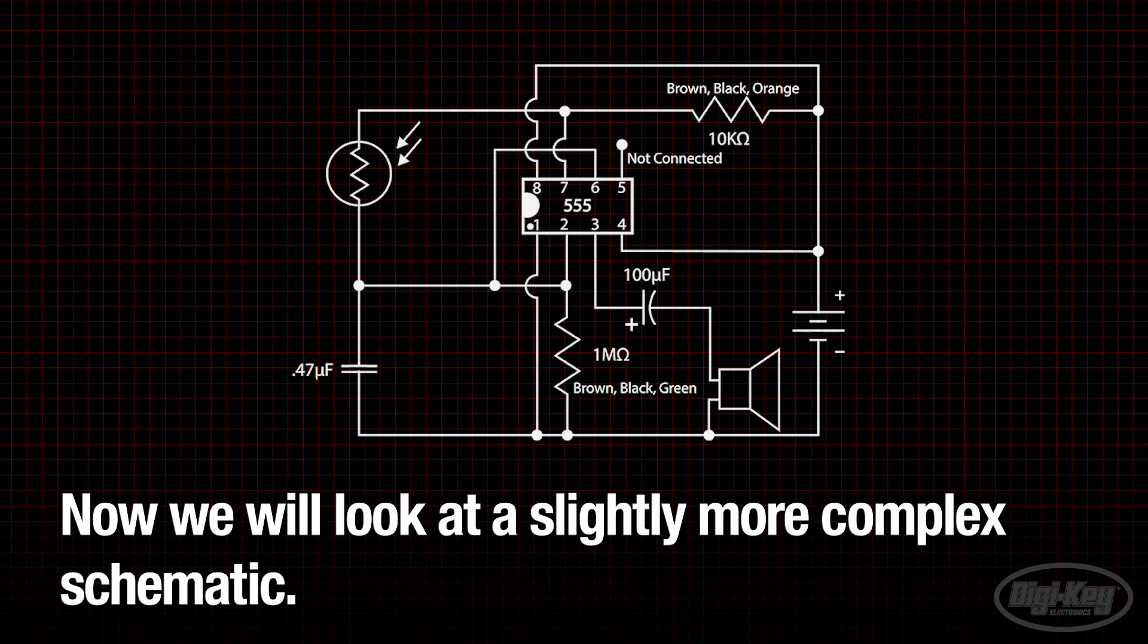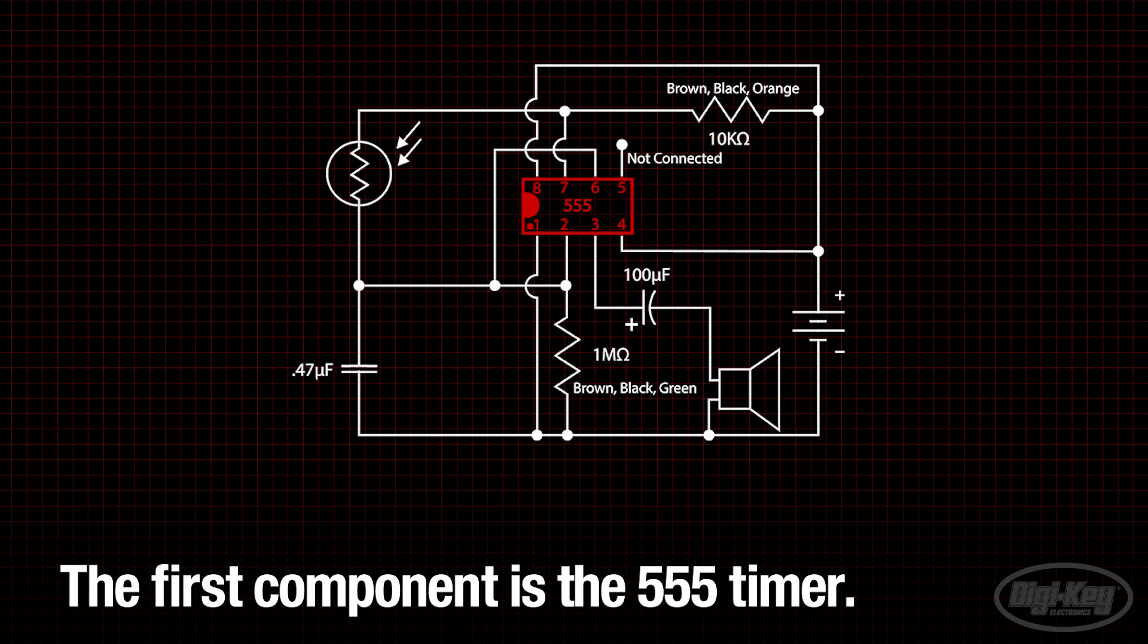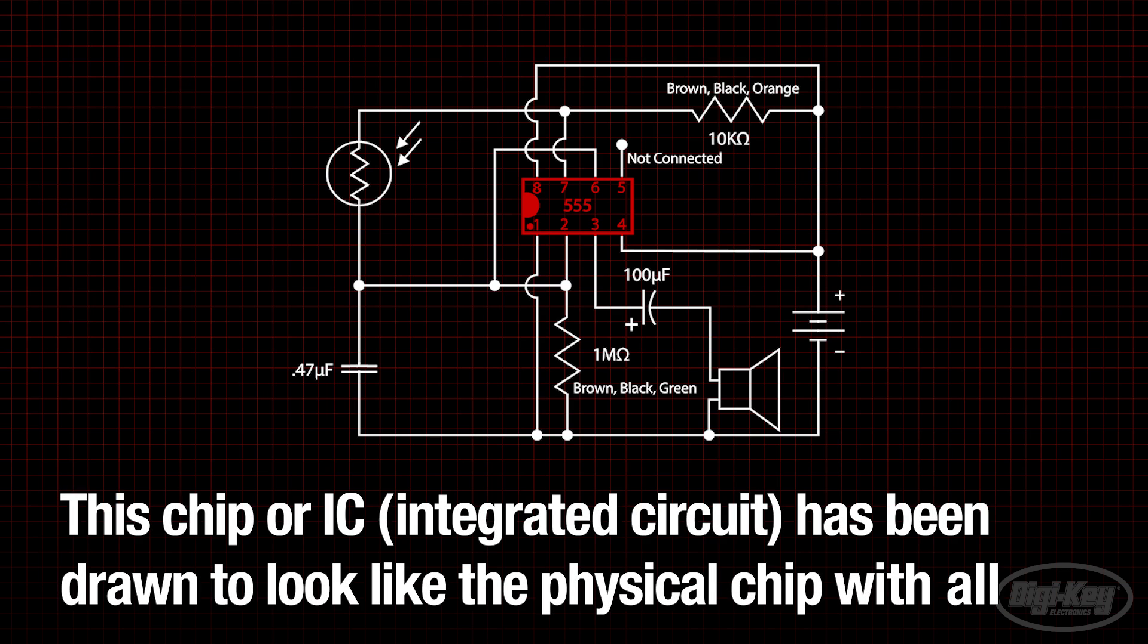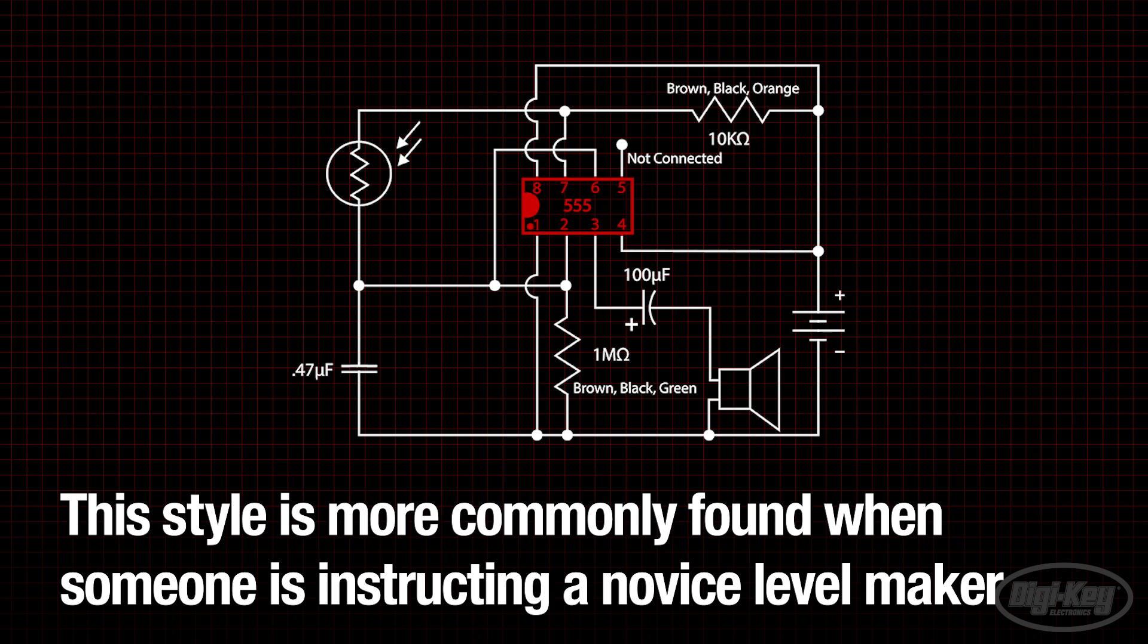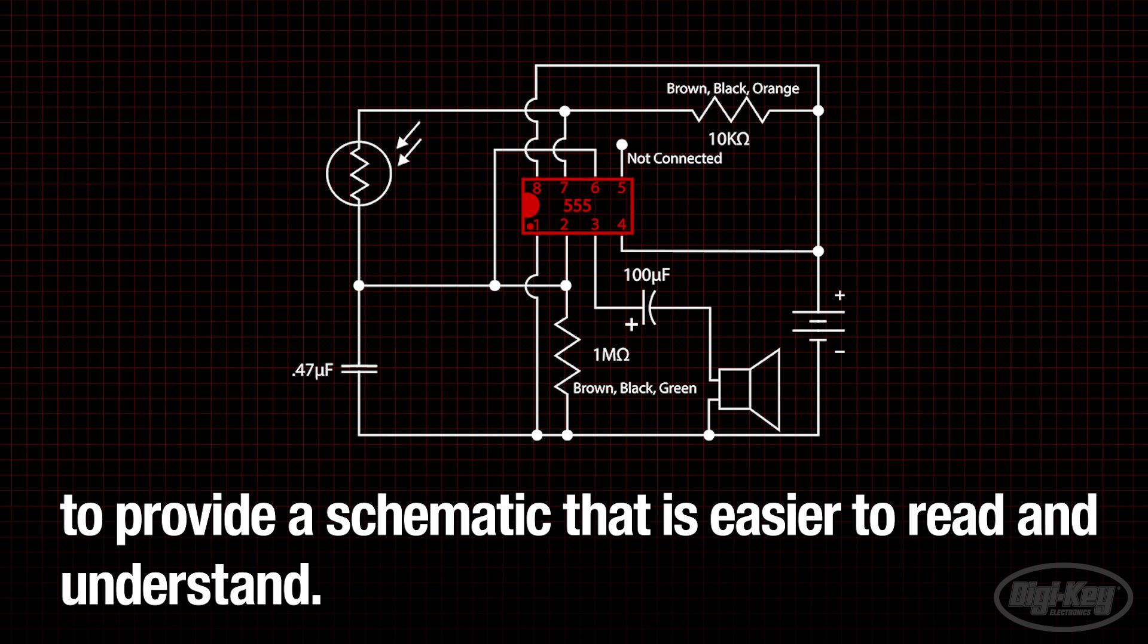Now let's look at a slightly more complex schematic. The first component I want to point out is the 555 timer. This chip, or IC, has been drawn to look like the physical chip with all of the leads in the correct position. However, this is not typical in a schematic. This style is more commonly found when someone is instructing a novice level maker to provide a schematic that is easier to read and understand.